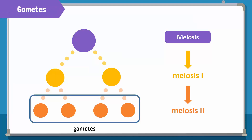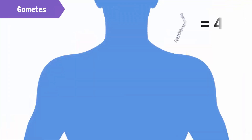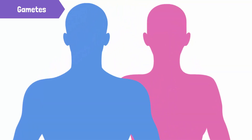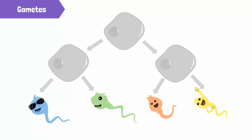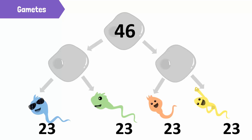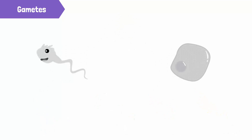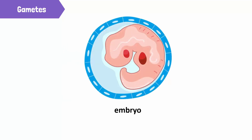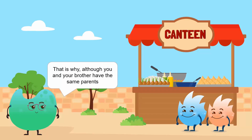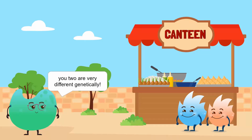These cells are called gametes. In humans, the chromosome number is 46 for a cell. Meiosis in males produces sperm cells, and in females produces eggs. The four gametes produced are different from each other. They are also different from the parent cell, because the parent cell had 46 chromosomes but the gametes only have 23 chromosomes each. Two gametes, one from the father and one from the mother, may fuse to form an embryo. Since each gamete is unique, the resulting embryo, which will have 46 chromosomes, is also unique. That is why, although you and your brother have the same parents, you two are very different genetically.